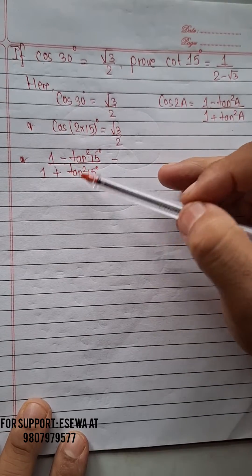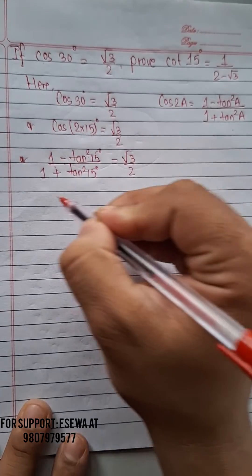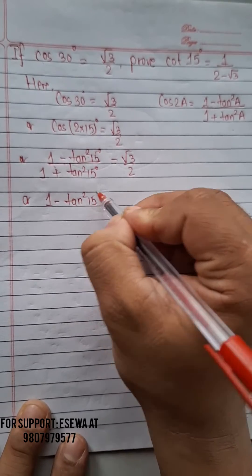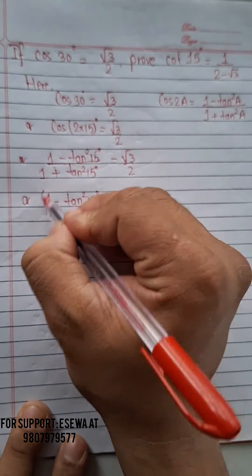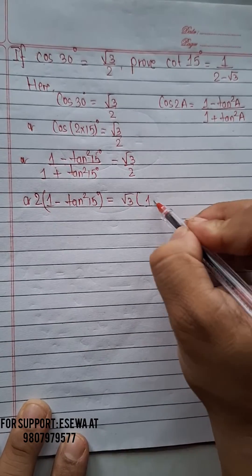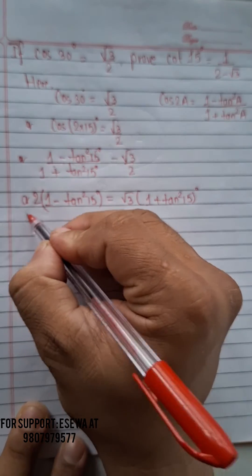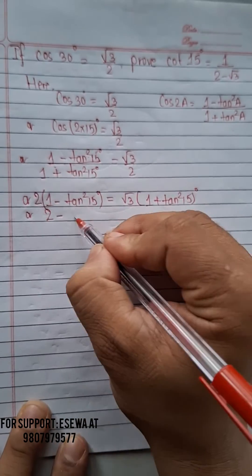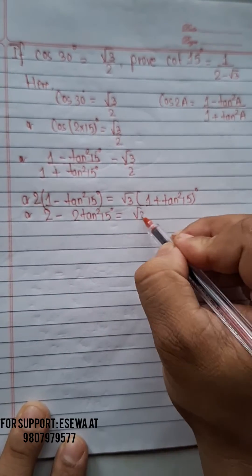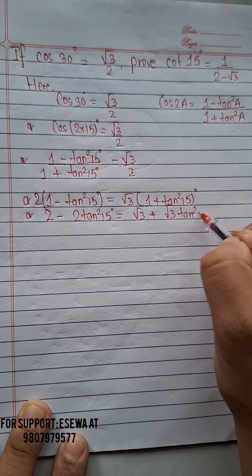This equals √3/2, so now we cross-multiply and solve. (1 - tan²15°) multiplies by 2, giving 2 - 2·tan²15°. And √3 multiplies by (1 + tan²15°), giving √3 + √3·tan²15°.